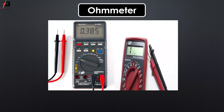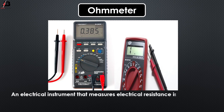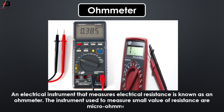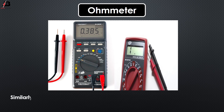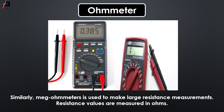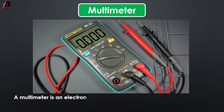Ohmmeter: An electrical instrument that measures electrical resistance is known as an ohmmeter. The instrument used to measure small values of resistance is a micro ohmmeter. Similarly, a mega ohmmeter is used to make large resistance measurements and resistance values are measured in ohms.